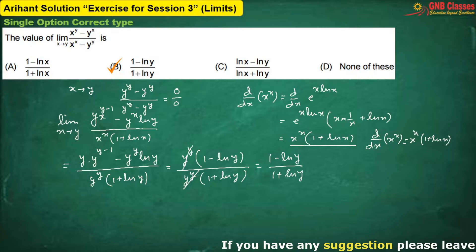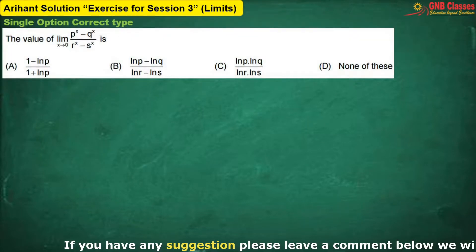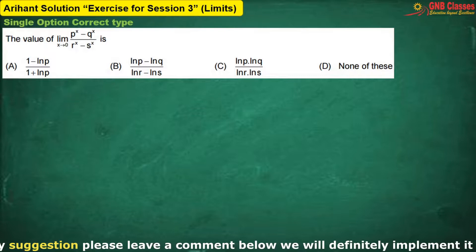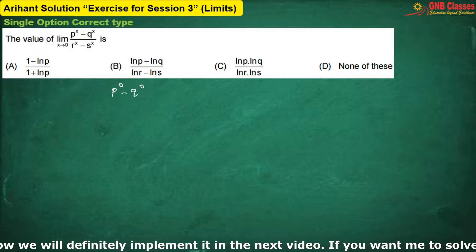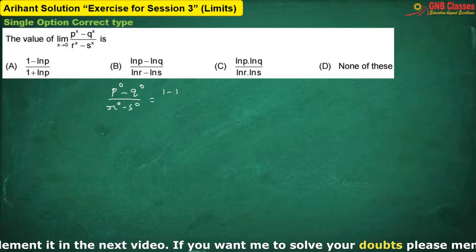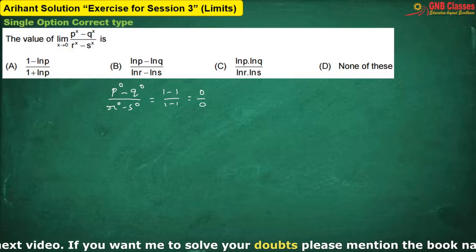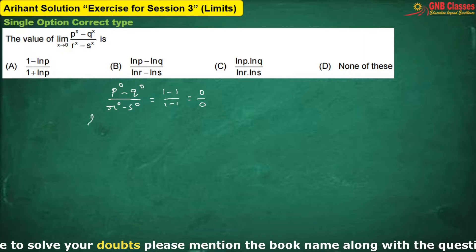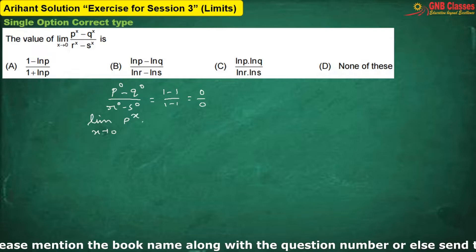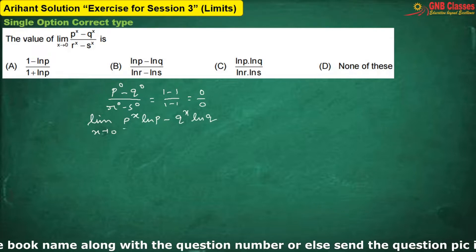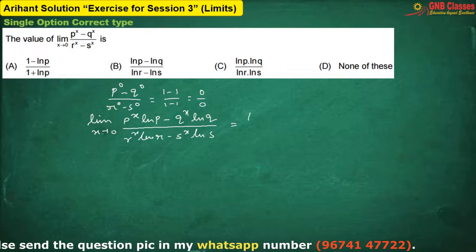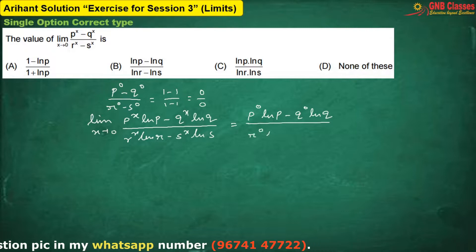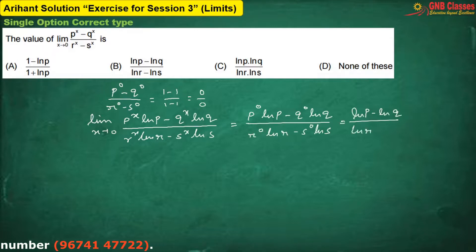Let us move to the next problem. Again, if we put the limit in the given function we get zero by zero form. So again applying L'Hôpital's rule: d/dx of p to the power x will be p to the power x times ln p. Now just put the limit and we get the answer. Hence option B is correct.